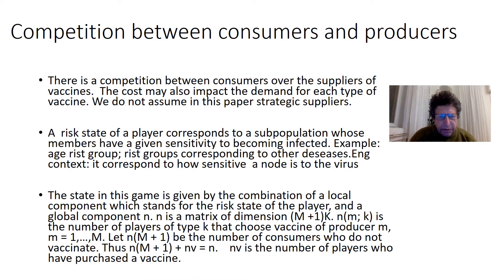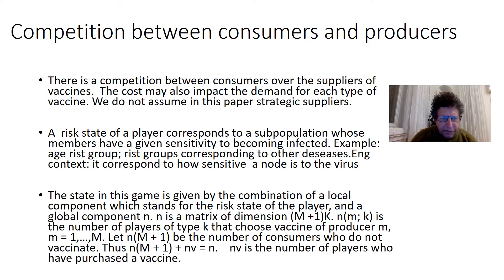The state in this game is given by the combination of a local component — the risk state of the player — and the global component N. N is a matrix of dimension (M+1) times K. N_{m,k} is the number of players of type k that choose vaccine of producer m, where m goes from 1 to M. N_{M+1} is the number of consumers who do not vaccinate at all. Thus N_{M+1} plus N_v equals N.